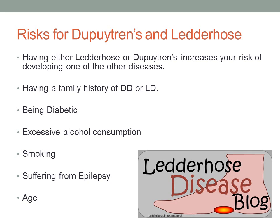In summary, if you have either Ledderhose disease or Dupuytren's disease, or a family history of these diseases, you are at increased risk. Similarly, if you are diabetic, drink excess alcohol, smoke, suffer from epilepsy or take epilepsy medication, or simply if you are older, you have an increased risk of developing Dupuytren's - and presumably by association, also Ledderhose disease.